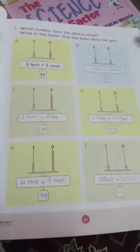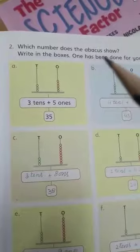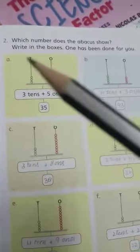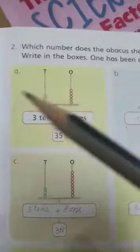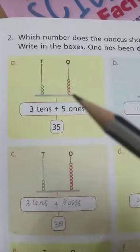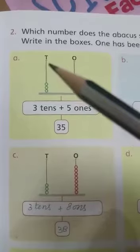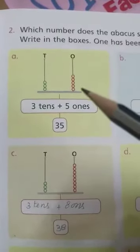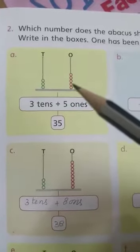Good morning, students. Here I am with your maths book on page number 31. At the top of the page is question number two: which number does the abacus show? Question a has been done for you. These bars show the tenths and these bars show the ones. T represents the tenths and O represents the ones.